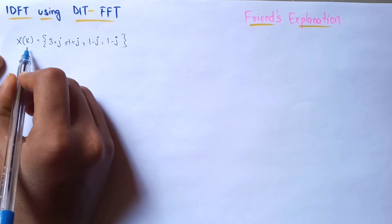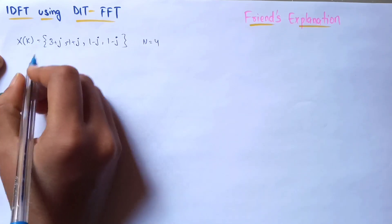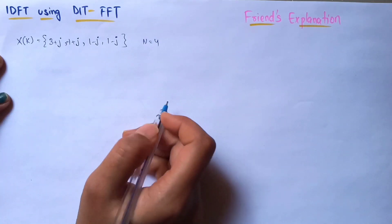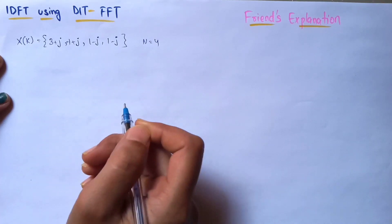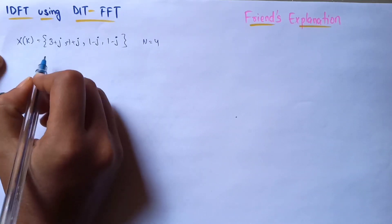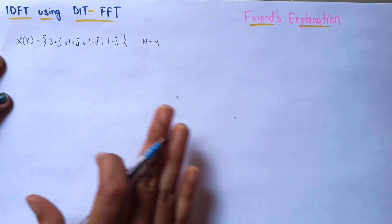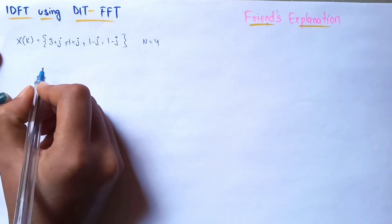I have here a sequence of length equal to four. This sequence is taken from the previous video and was the result of the Discrete Fourier Transform of a given time-domain sequence — so this is in the frequency domain. Here we will perform Inverse Discrete Fourier Transform to convert it back into the time domain.